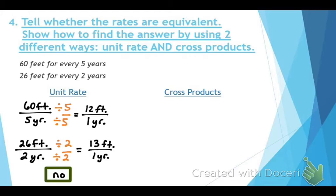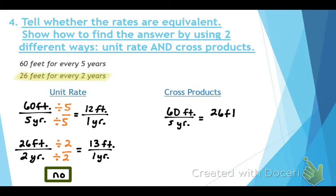The second method to check equivalence is cross products. Write the first rate as 60 feet per five years, set equal to 26 feet per two years. With cross products, we have two ratios set equal to each other.